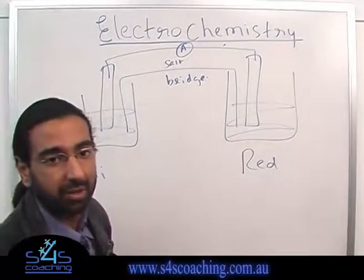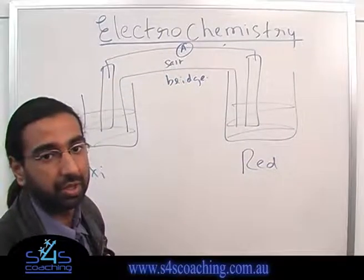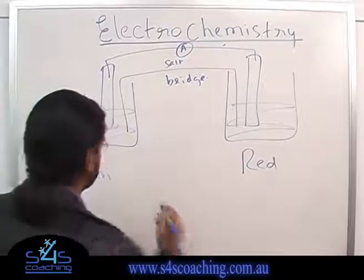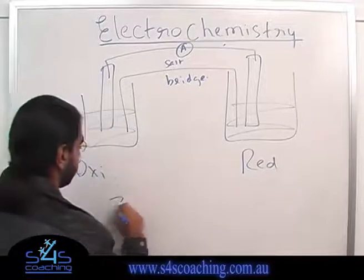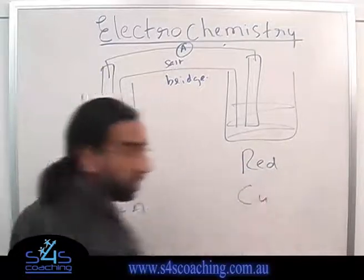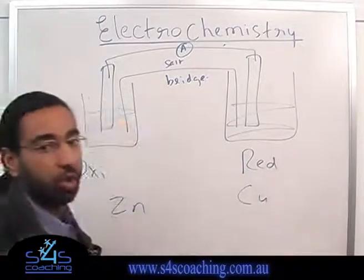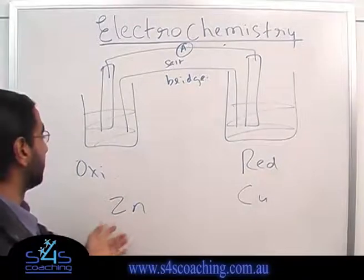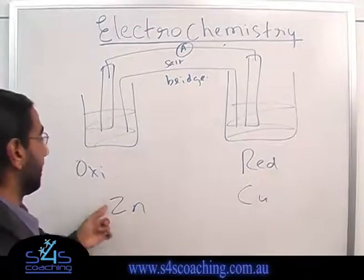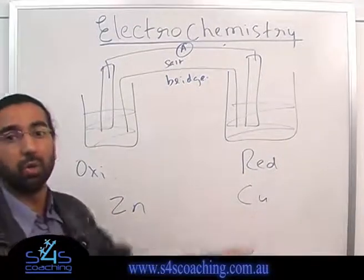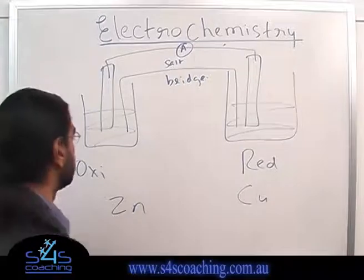Let's have a look at an example. Let's say I use copper and zinc. So I have zinc and I have copper. Now I know that zinc is actually more reactive, so zinc will undergo oxidation and copper will undergo reduction.